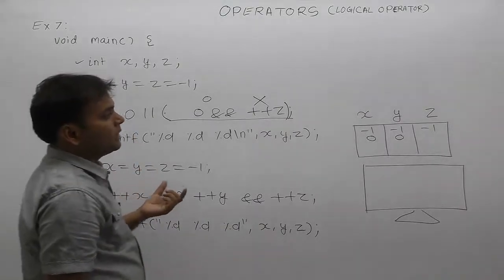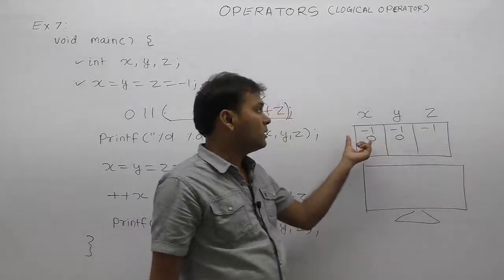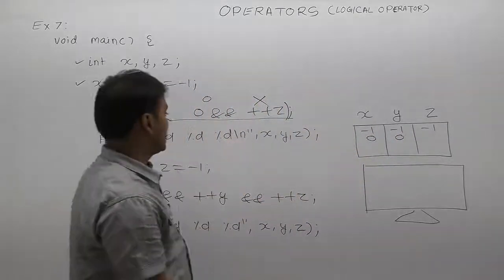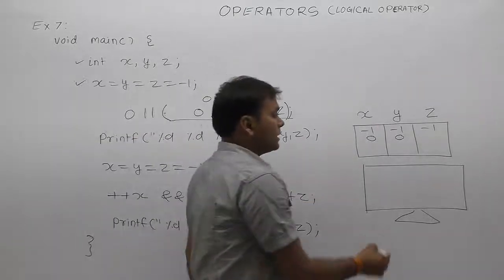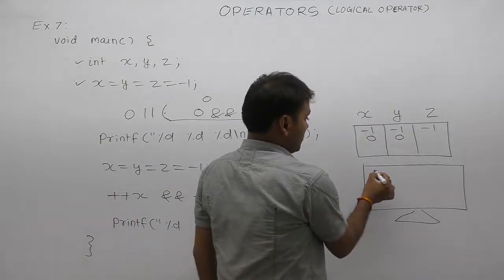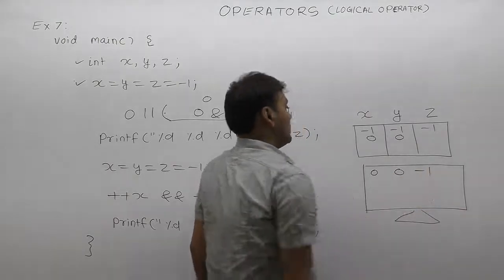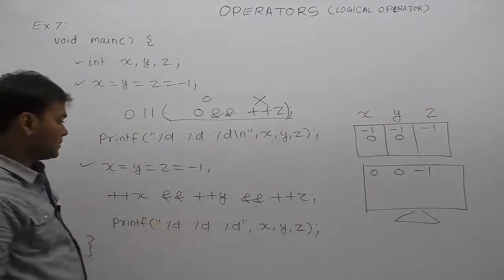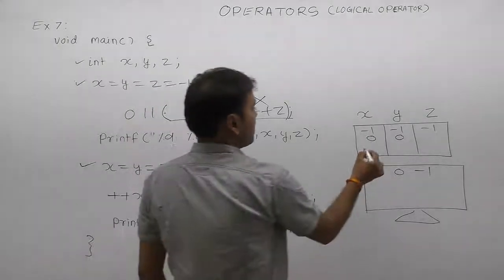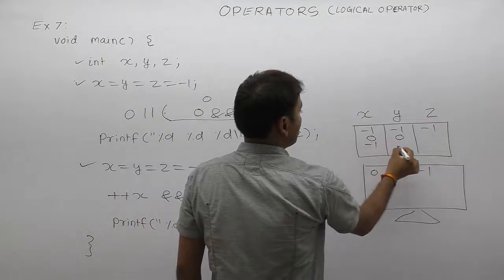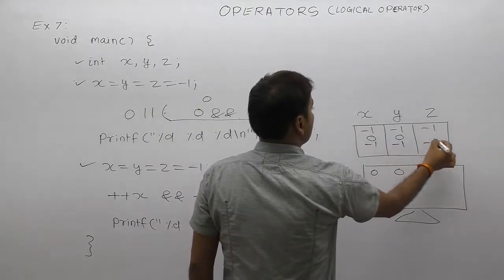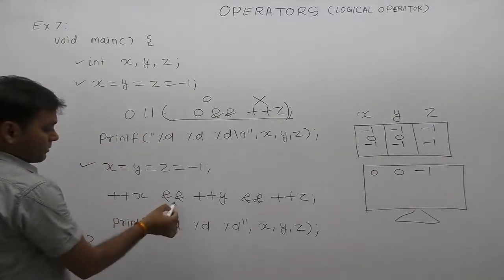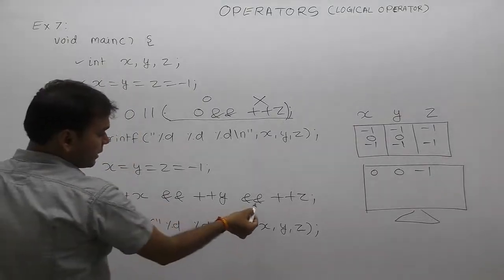Next one, again testing another way of same expressions. Again, x, y, z initialized by minus one. Value of x minus one, value of y minus one, value of z is minus one. Next one, again solving this condition.